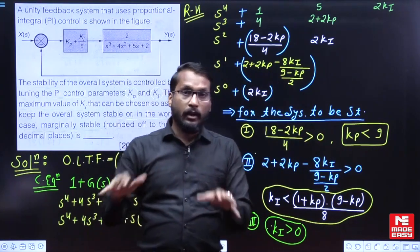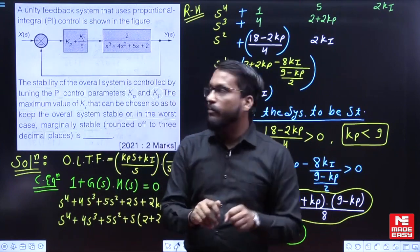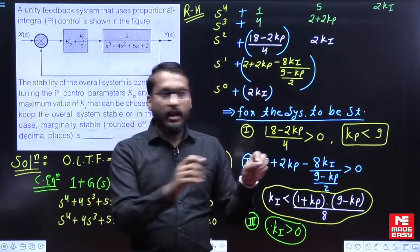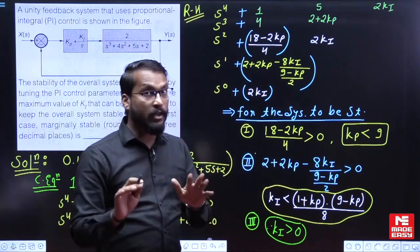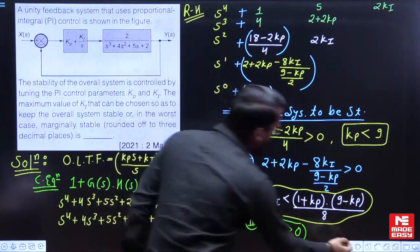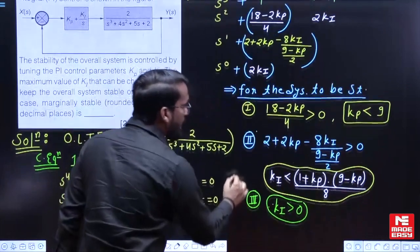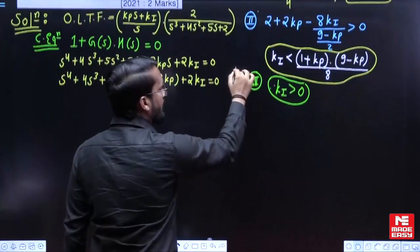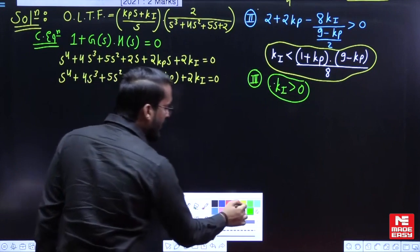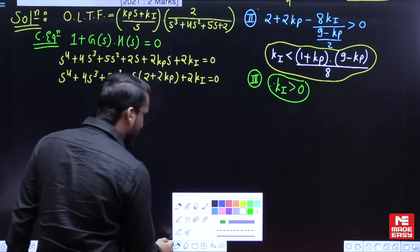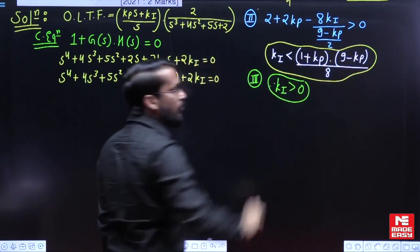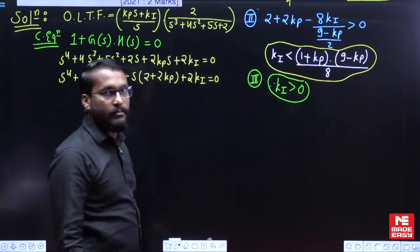In this particular question, the examiner has given a PI controller and asked what is the maximum value of KI that will keep the system stable. We see that the possible range of KI depends on KP, so for a particular value of KP there will be a maximum possible value of KI.